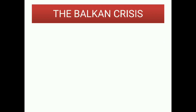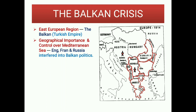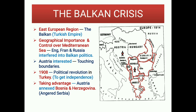The Balkan Crisis: The Balkans were an East European region under the Turkish Empire, with geographical importance and control over the Mediterranean Sea. England, France, and Russia interfered in Balkan politics. Austria was interested due to its touching boundaries. In 1908, a political revolution started in Turkey for independence. Taking advantage, Austria annexed Bosnia and Herzegovina, which angered Serbia.